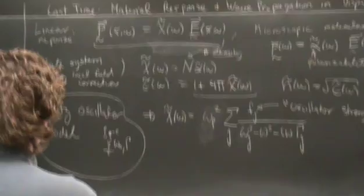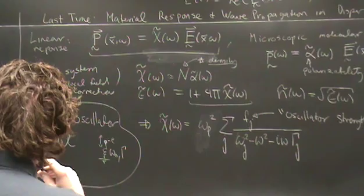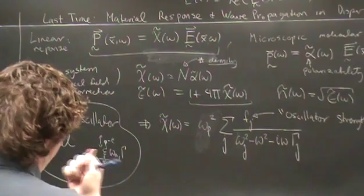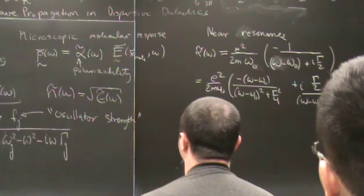We looked at a particular model that gets us a long way in understanding the physics: the so-called Lorentz oscillator model, in which we think about the bound charges making up the dielectric as being harmonically bound on a spring with some natural resonance frequency omega-naught and some damping rate gamma. From that, we were able to derive the complex polarizability by solving the steady-state behavior of the damped simple harmonic oscillator.